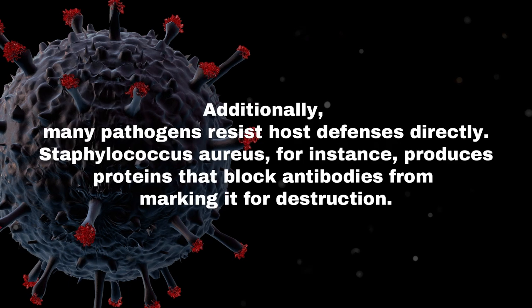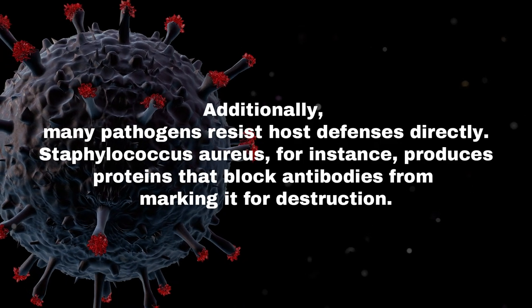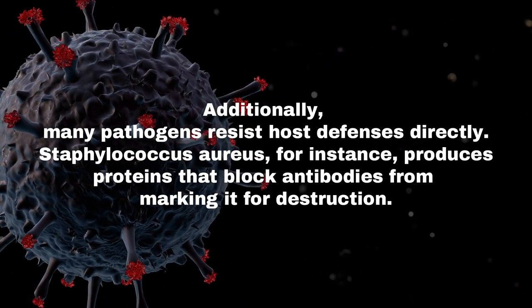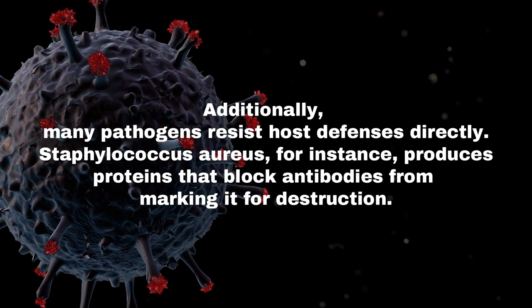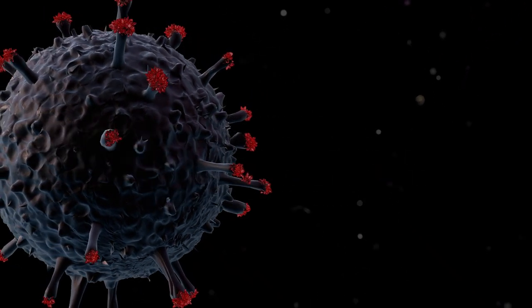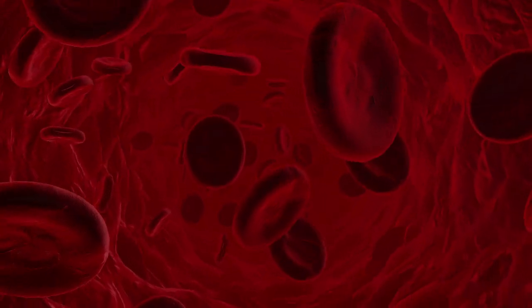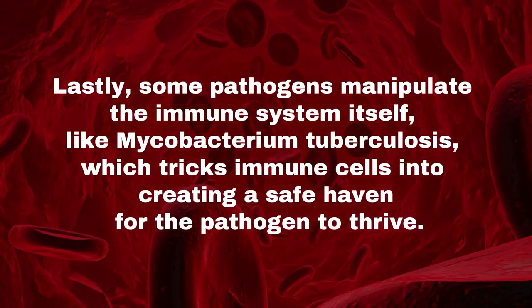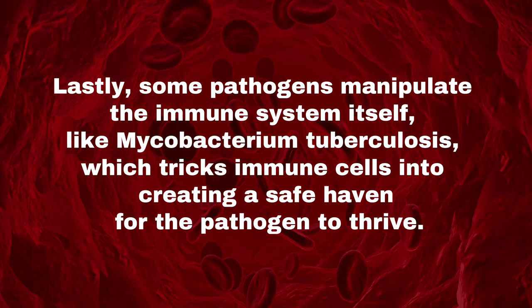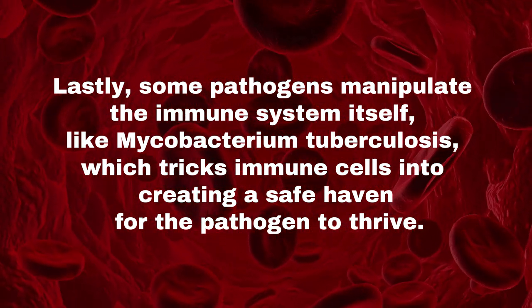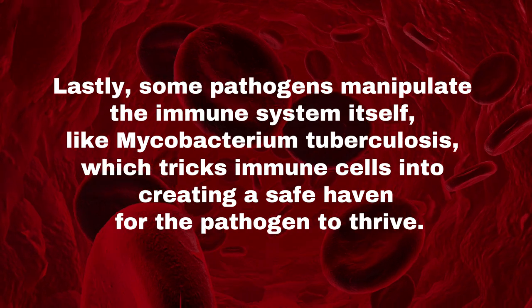Additionally, many pathogens resist host defenses directly. Staphylococcus aureus, for instance, produces proteins that block antibodies from marking it for destruction. Lastly, some pathogens manipulate the immune system itself, like Mycobacterium tuberculosis, which tricks immune cells into creating a safe haven for the pathogen to thrive.